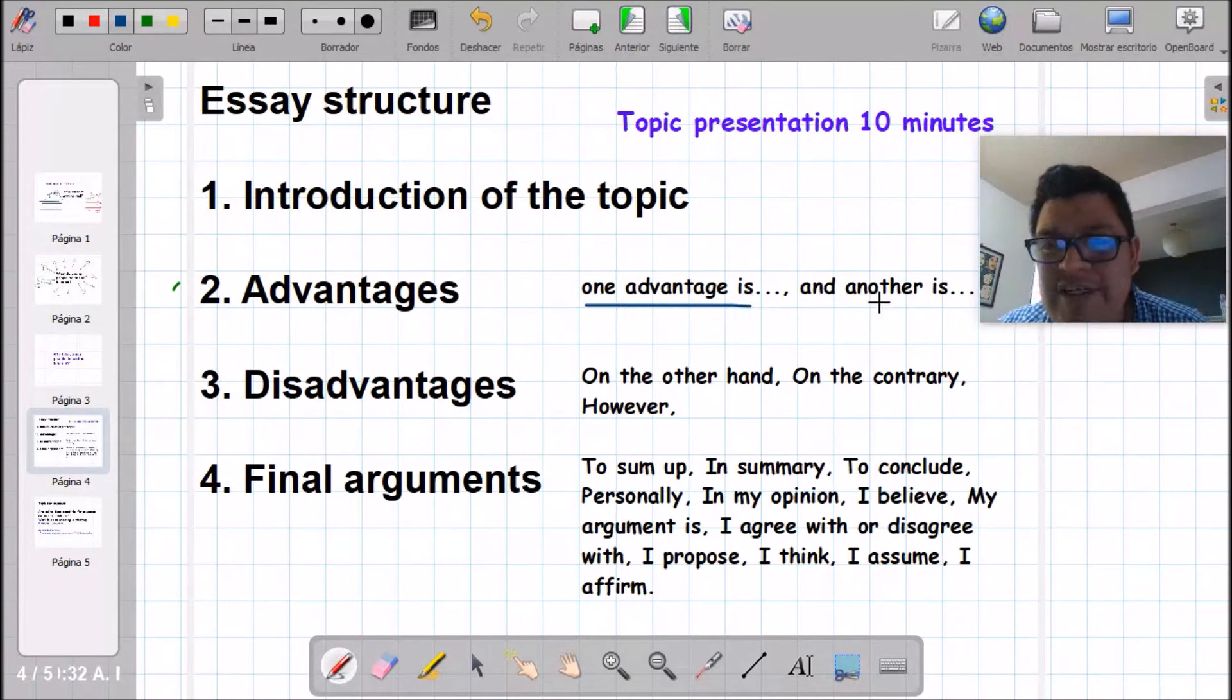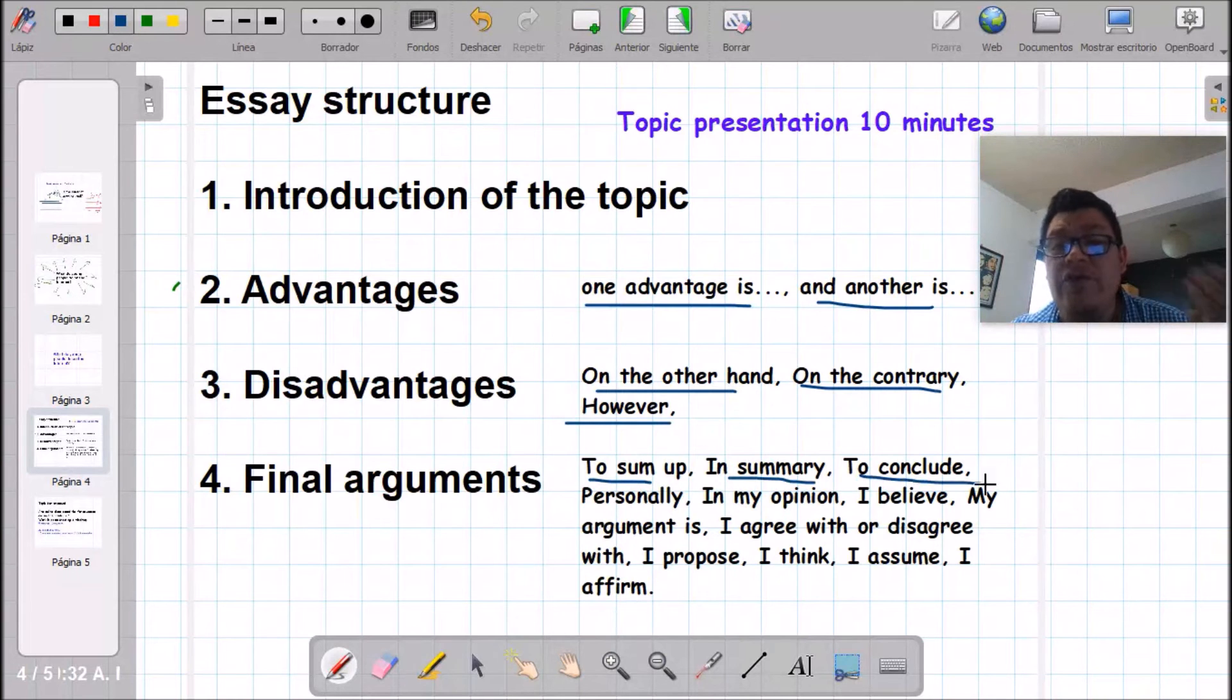For example, one advantage is, and another one is, if we're talking about this part of the essay. Or also, on the other hand, on the contrary, however, if we're talking about contrasting. Your final arguments, you can use words such as sum up, in summary, to conclude, personally I believe, my argument, I agree, disagree, I propose, I think, I assume, I affirm. All of these words students can relate into different sections.